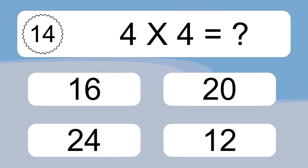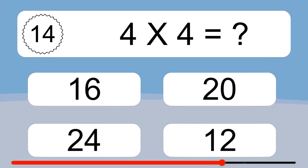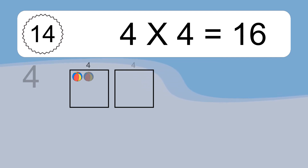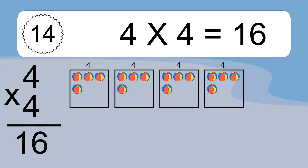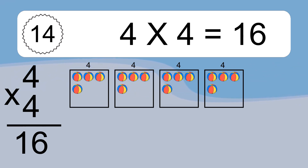8 times 4 equals what? 8 times 4 equals 32. We have 4 boxes and each box has 4 colorful balls inside. If you count all the balls in all the boxes together, you will have 4 times 4 balls. This equals 16 balls.